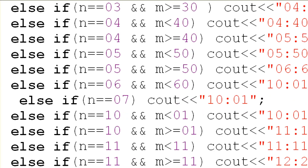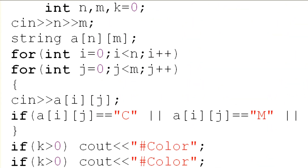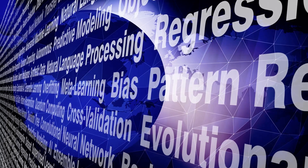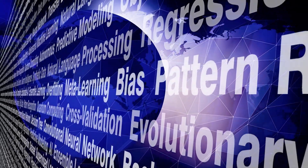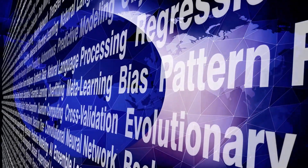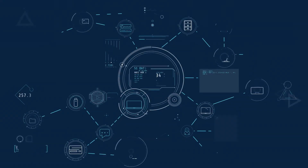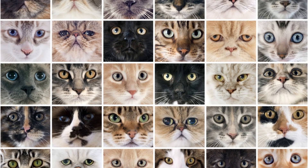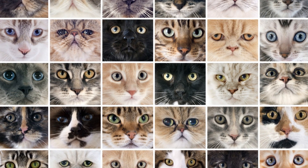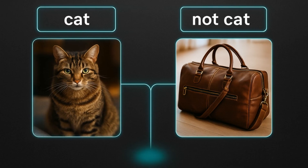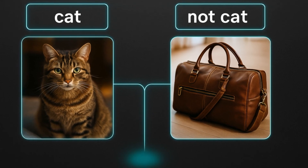In traditional software, you write rules and the machine follows them. In machine learning, you give the machine data and it figures out the rules by itself. A classic example: you feed a model thousands of photos labeled 'cat' and 'not cat.' Eventually, it learns to recognize what a cat looks like.